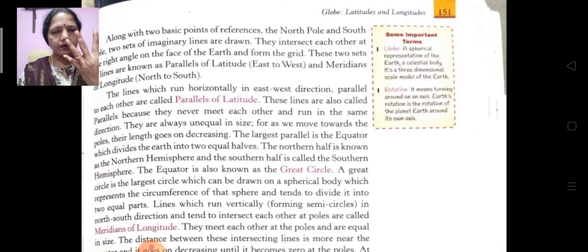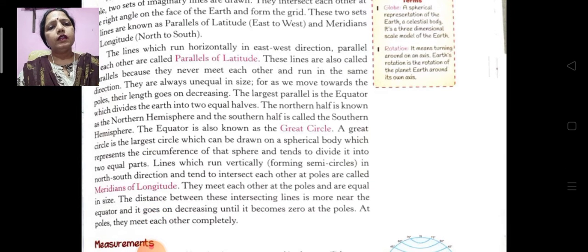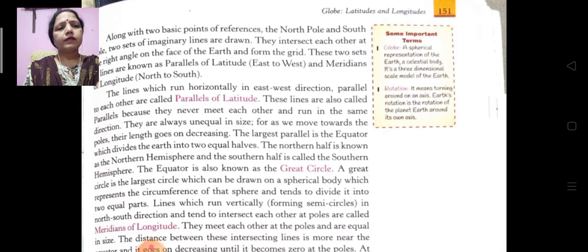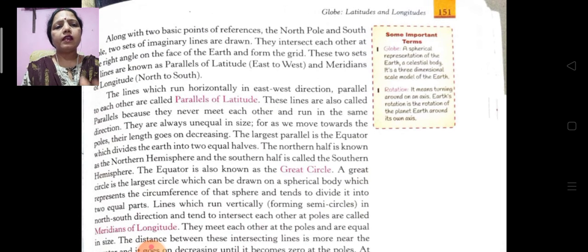There are four main directions: north to south, east to west. The lines which run horizontally in east to west direction, parallel to each other, are called parallels of latitudes. These lines are also called parallels because they never meet each other and run in the same direction. They are always unequal in size.